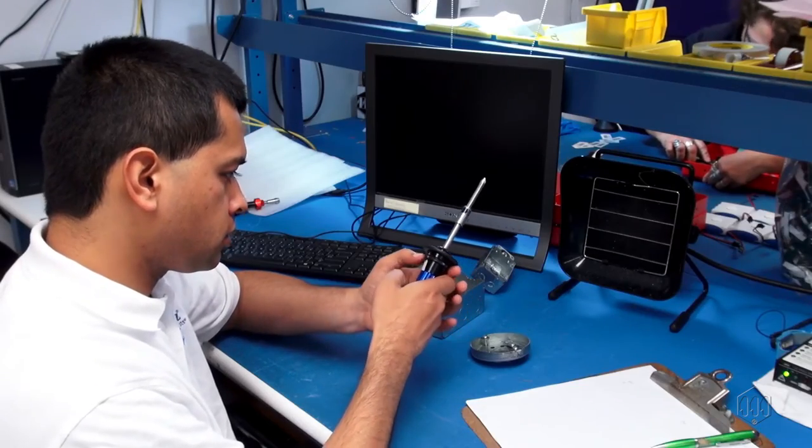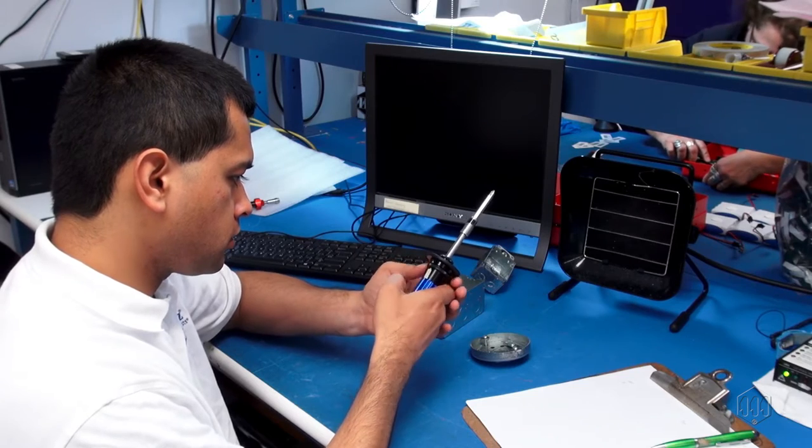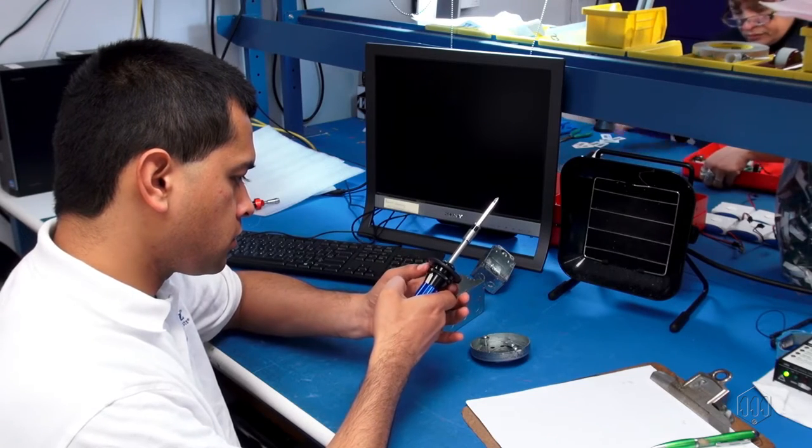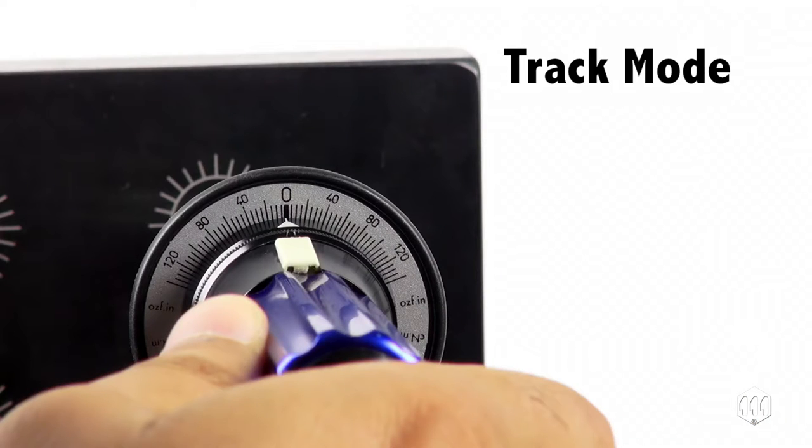The screwdriver can be used in track or peak mode and is operational in both directions in either mode. In track mode, the torque value applied is constantly tracked and displayed.